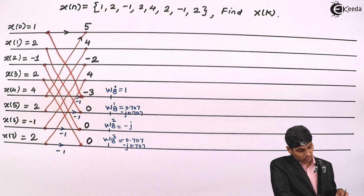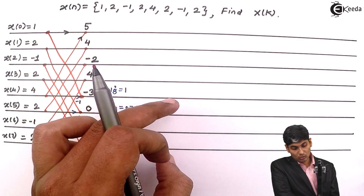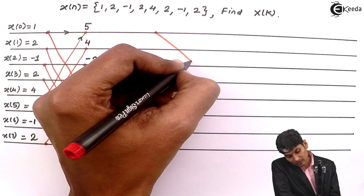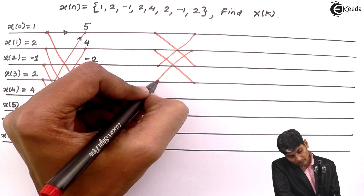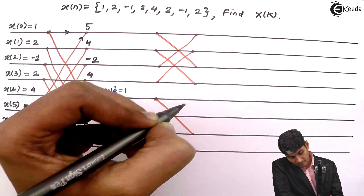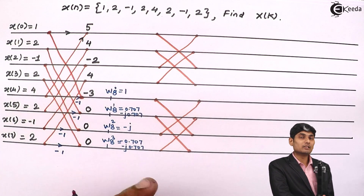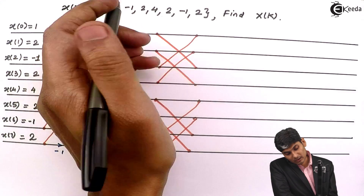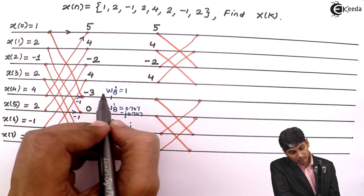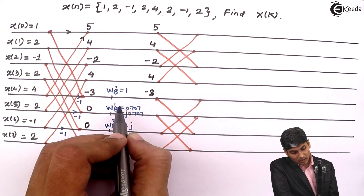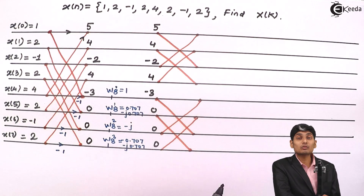Now we go to the second stage, which has shorter crisscrosses between the upper 4 lines and the lower 4 lines. In the upper 4 lines, crisscrosses connect the first with the third and the second with the fourth line. The output of the first stage becomes input of the second stage: 5, 4, minus 2, 4 on the upper lines. Then minus 3 multiplied by 1 is minus 3, and the zero values multiplied by their twiddle factors remain 0.